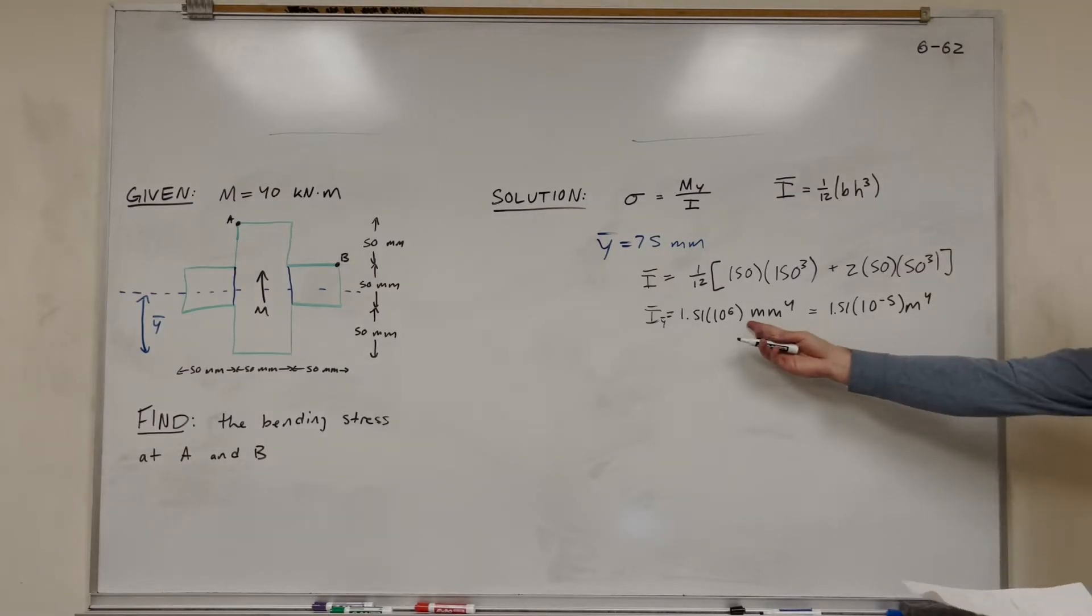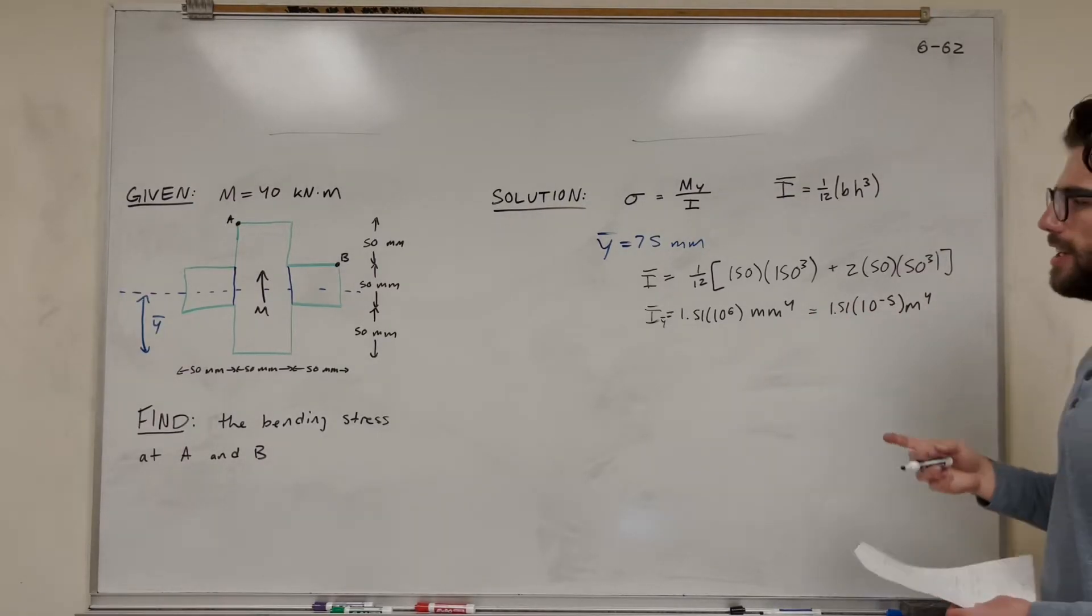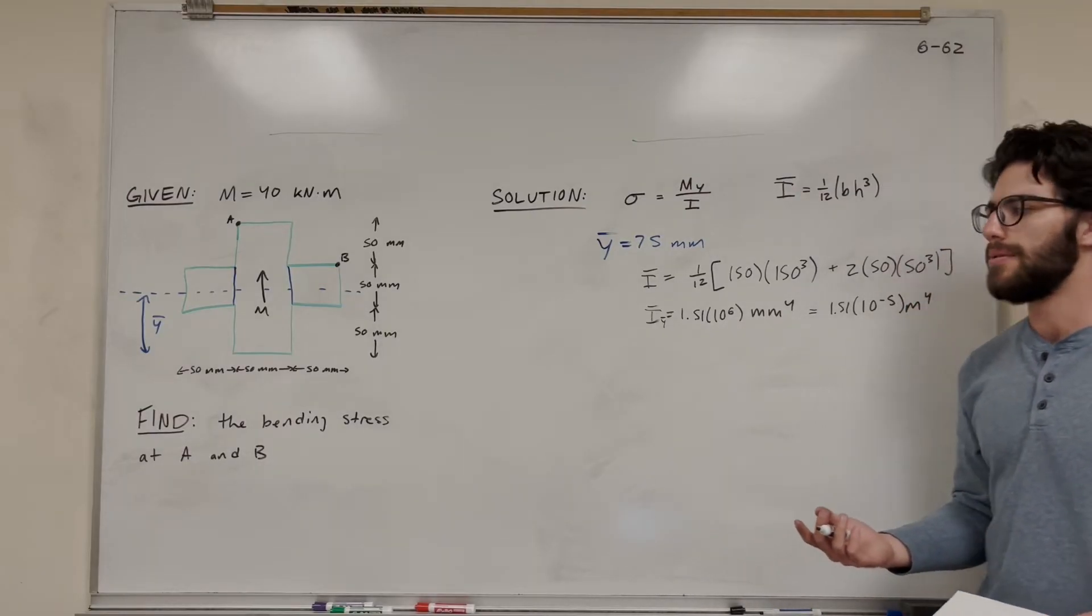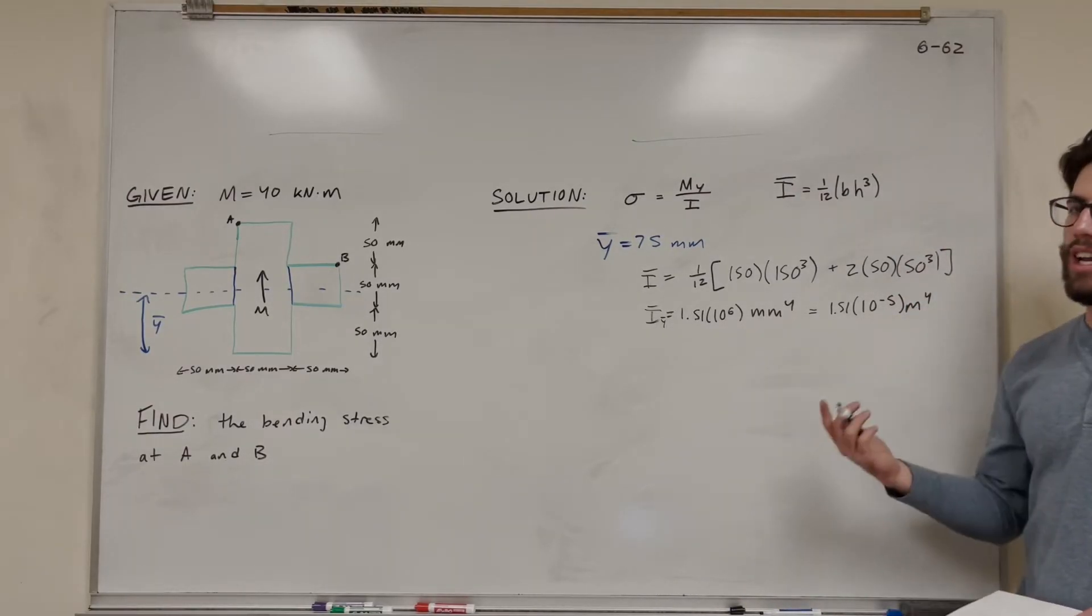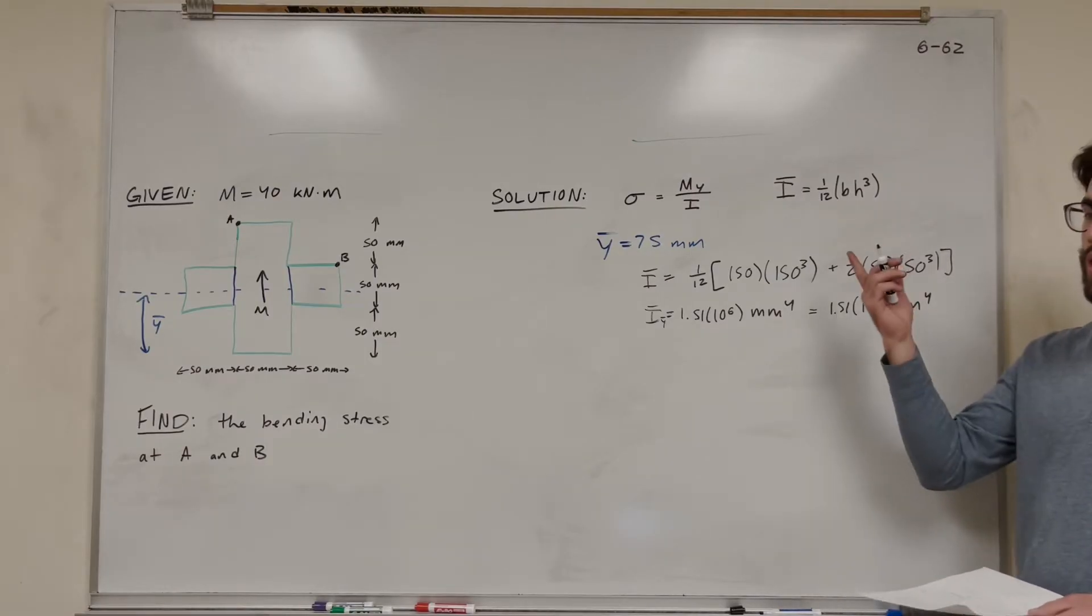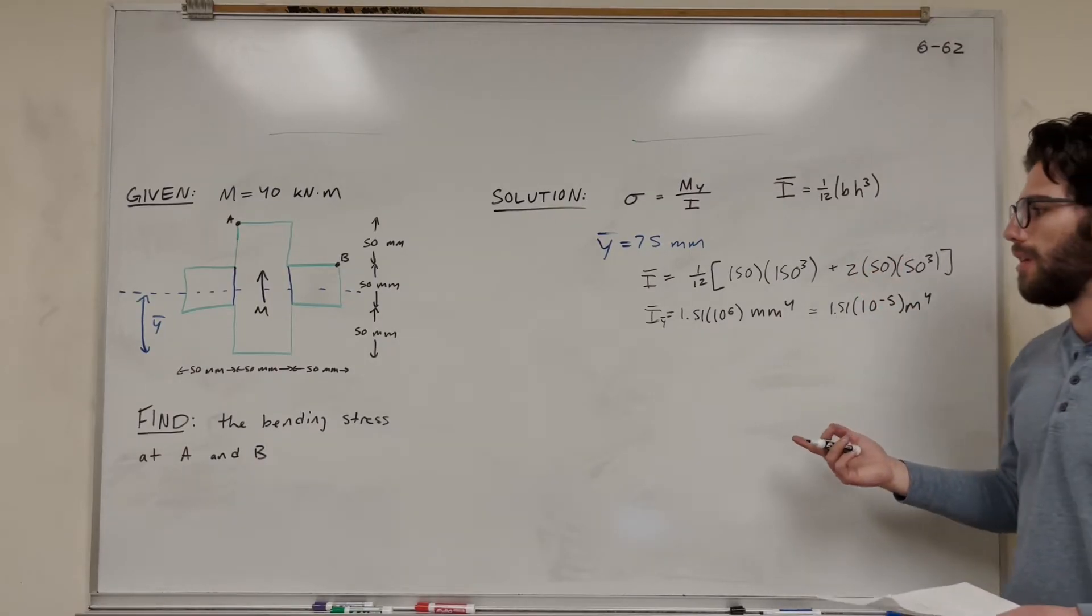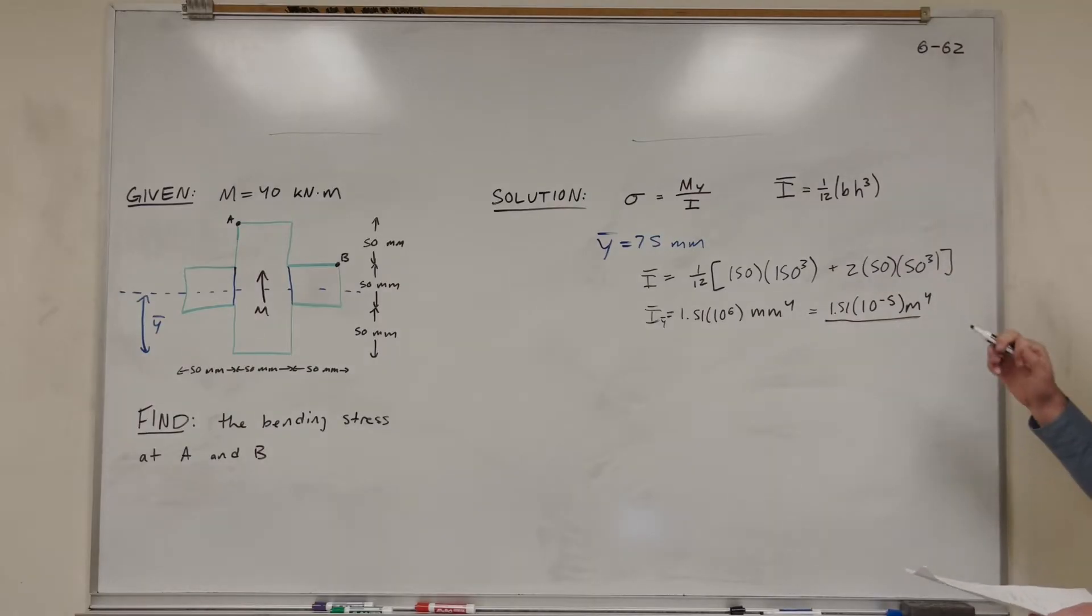So how you convert from millimeters to the 4th to meters to the 4th is to multiply by 10 to the negative 12th. Because converting from millimeters to meters is 10 to the negative 3rd, and then it's to the 4th, so negative 3 times 4 is negative 12th. So this is the number we're going to use for I.